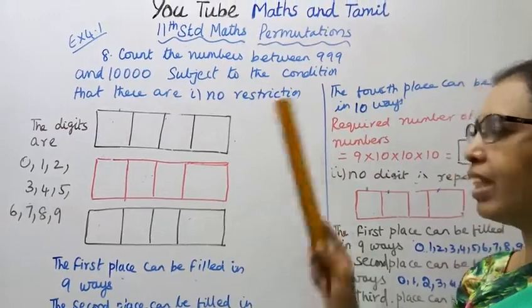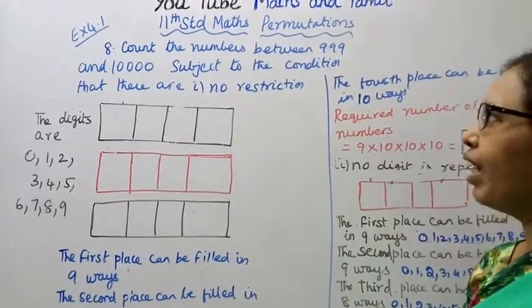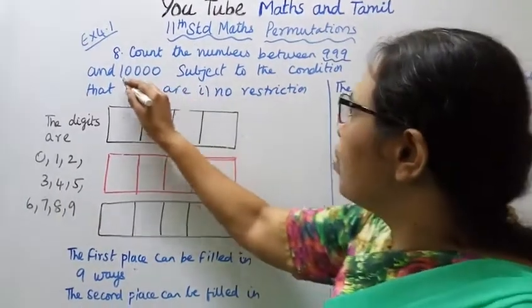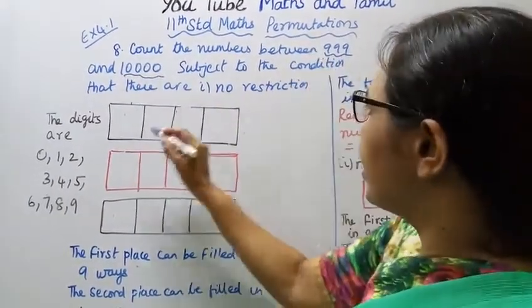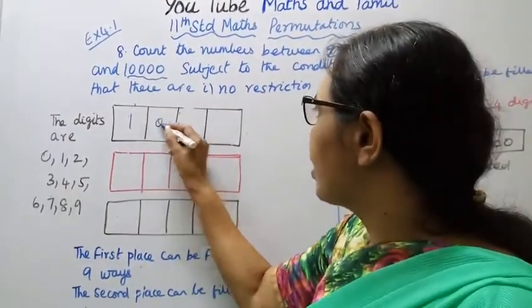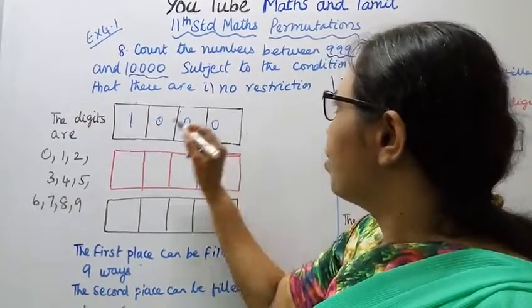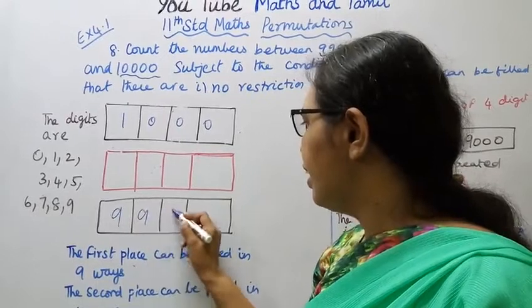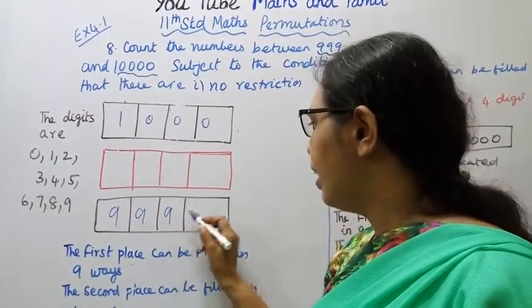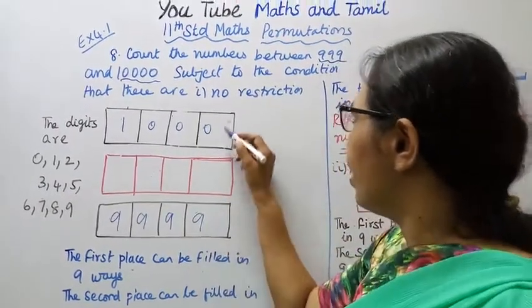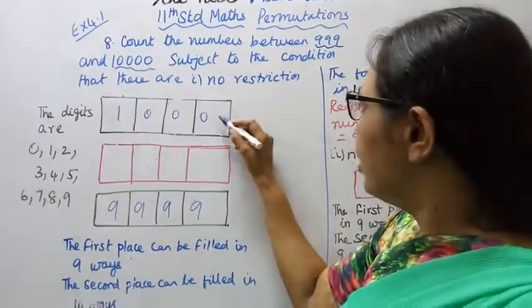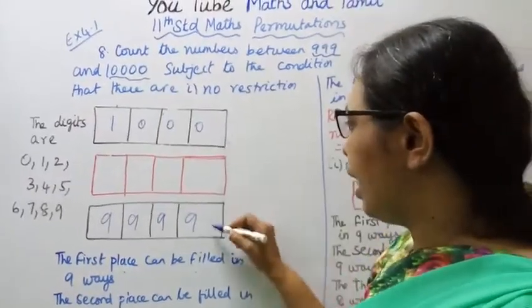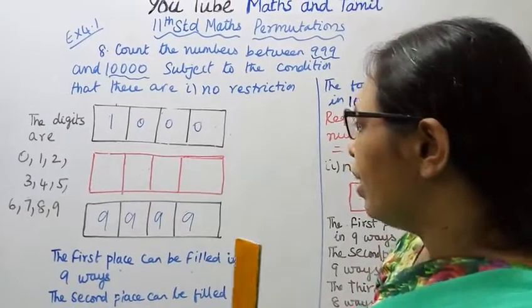No restrictions means we consider numbers between 999 and 10,000. That means 4-digit numbers. So the first number is 1000 and the last number is 9999.